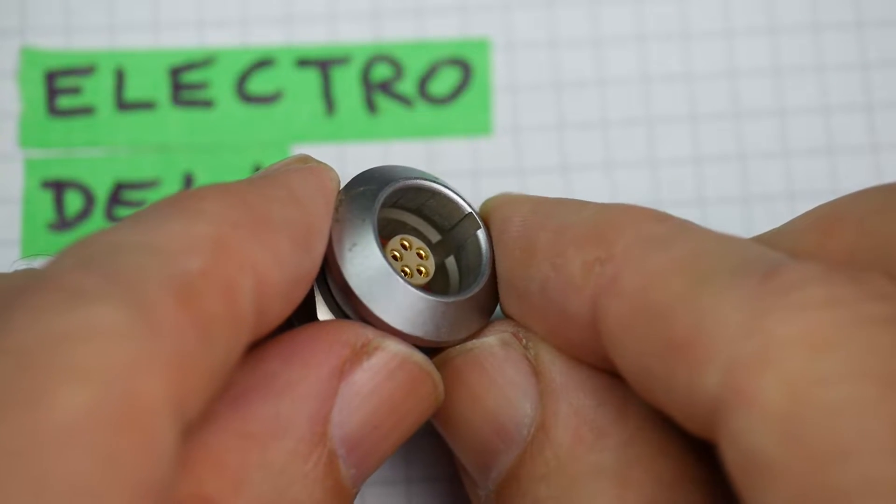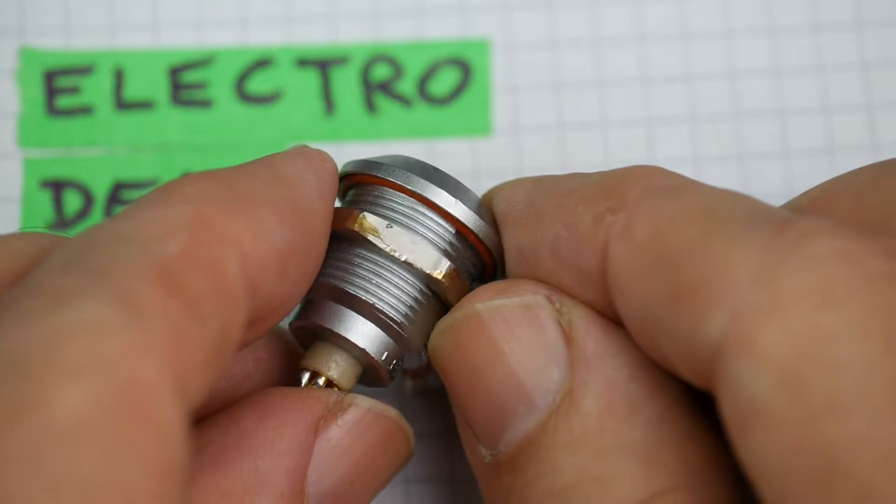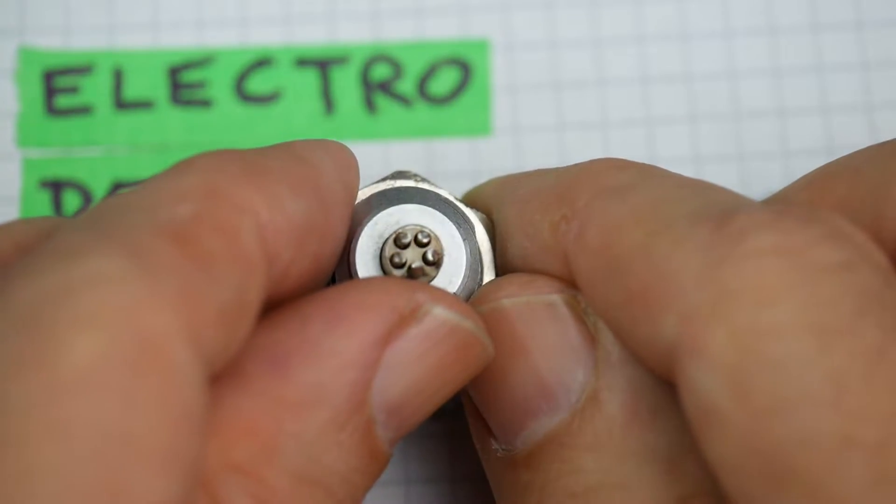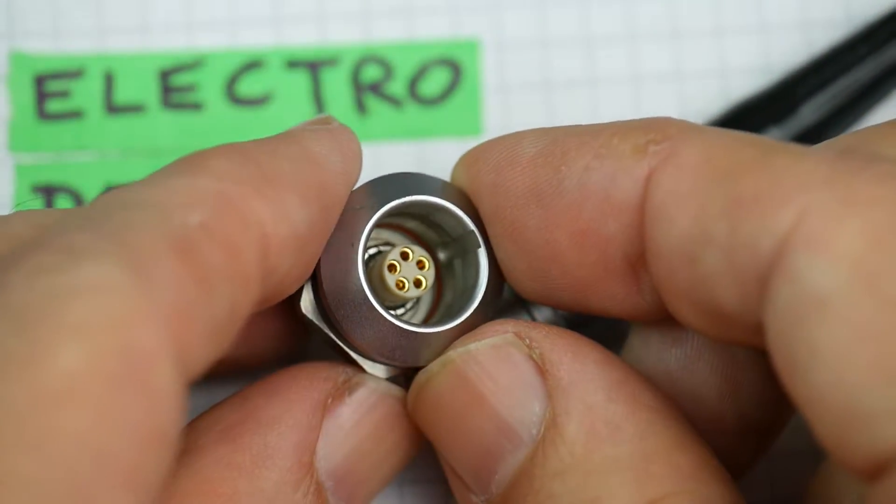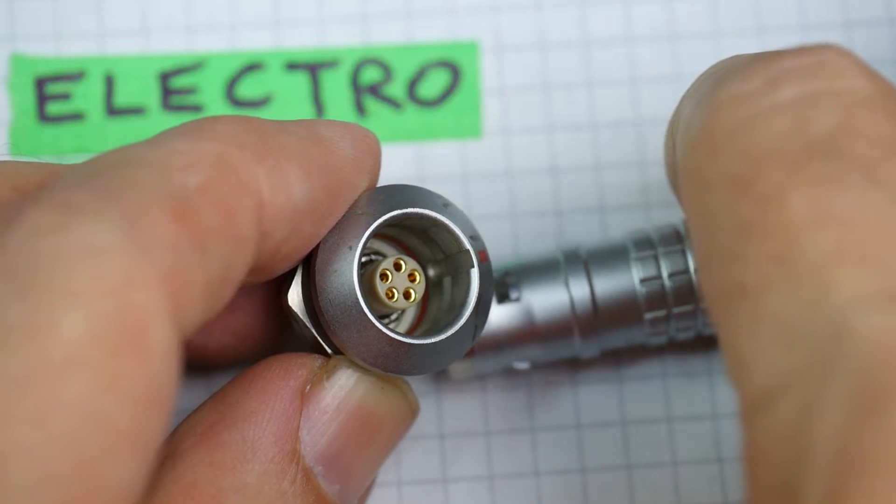It's a little bit like a DIN connector, but it's a much nicer bit of kit. It's quite tiny to solder on the back there and you can see it's got five pins, all gold plated.